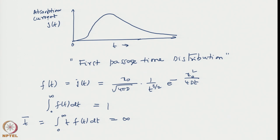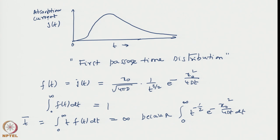In fact, it will not have any other moment — t² also will go to infinity. And why? Because this integral from 0 to ∞, when you multiply by t, it is essentially t^(−1/2) × e^(−x₀²/4Dt) dt. This integral goes as t^(−1/2) as t tends to infinity, and the integral of t^(−1/2) is divergent, so this tends to infinity. In fact, this integral is infinity.